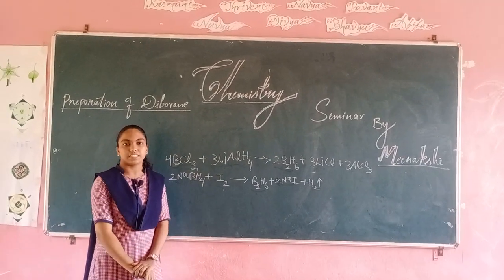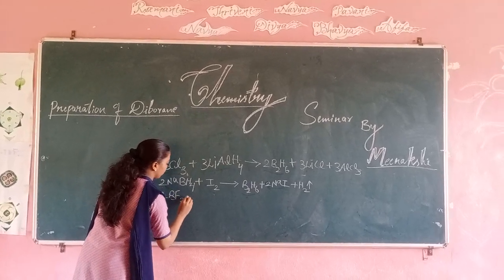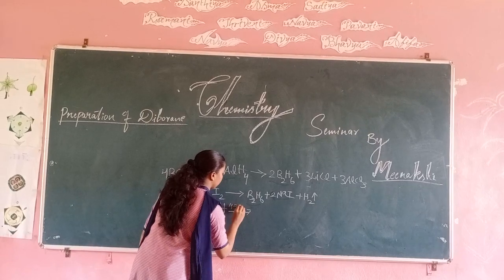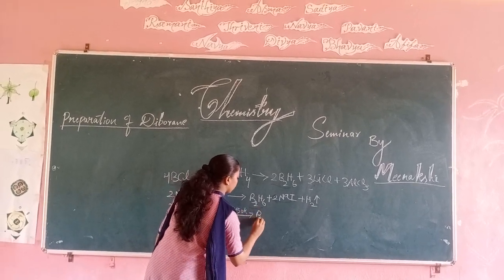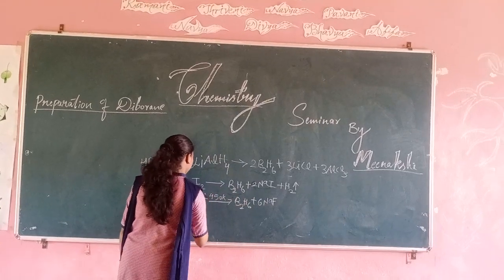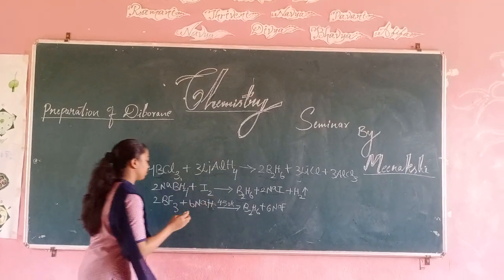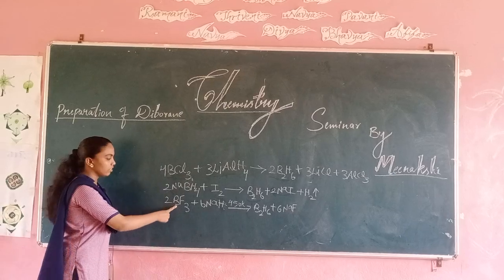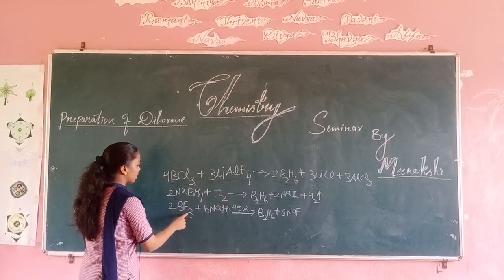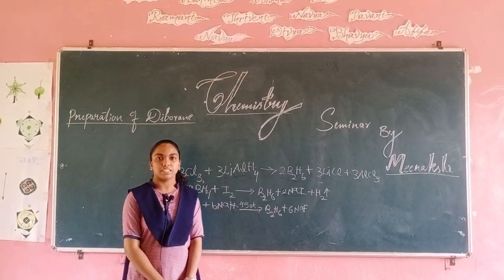Another reaction: BF₃ reacts with NaH to form Diborane. 2 atoms of Boron react with 6 atoms of Hydrogen to form Diborane at 450 Kelvin. 6 atoms of F react with NaH to form 6 NaF. Thank you for giving this opportunity.